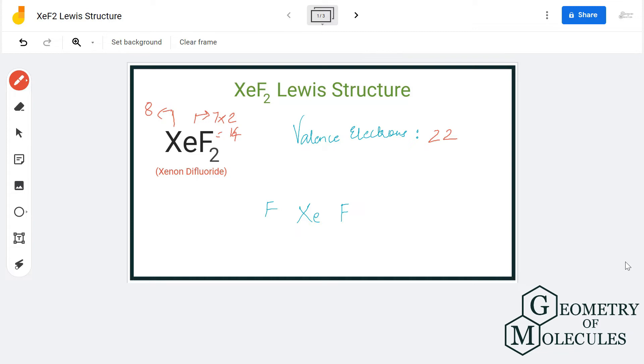Now that we know the total number of valence electrons, we will start placing the atoms and their individual valence electrons. You might be wondering, if Xe already has 8 valence electrons in its outer shell, why does it need to share its electrons with fluorine atoms? The xenon atom here is an exception to the octet rule and it can accommodate more than 8 valence electrons in its outer shell.